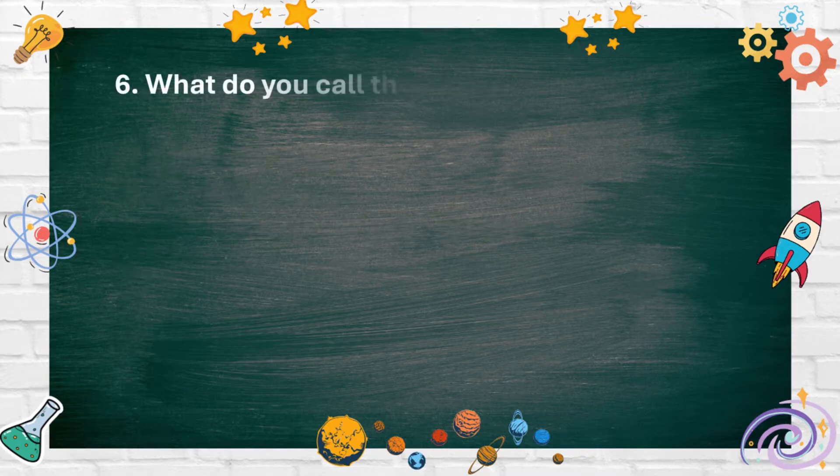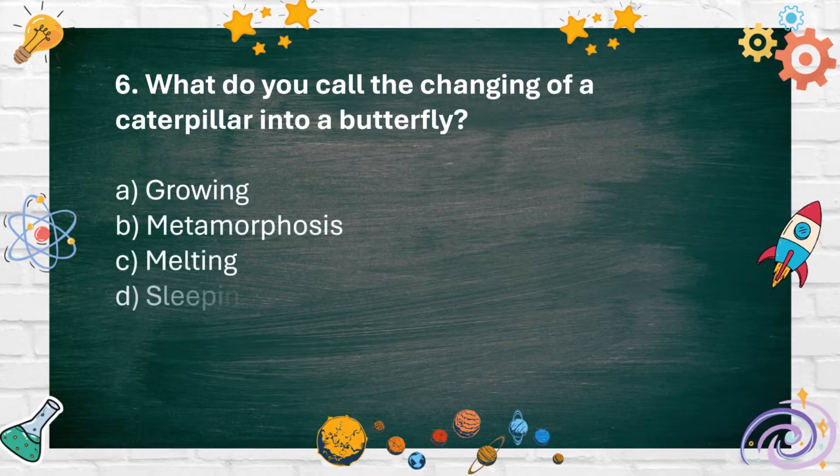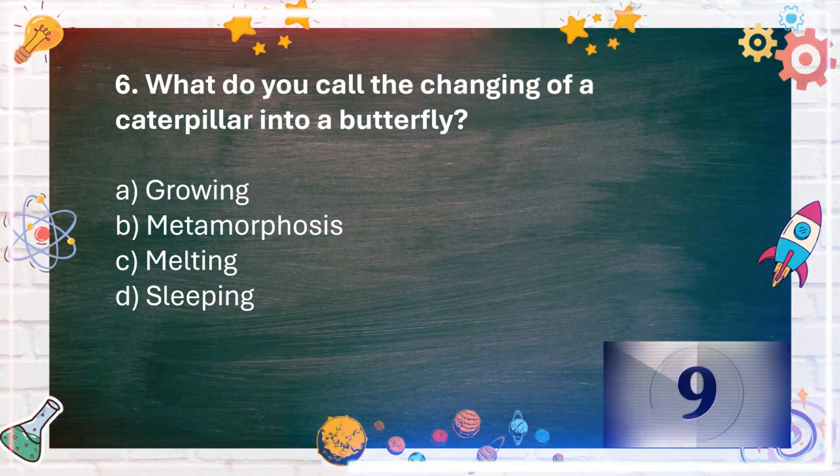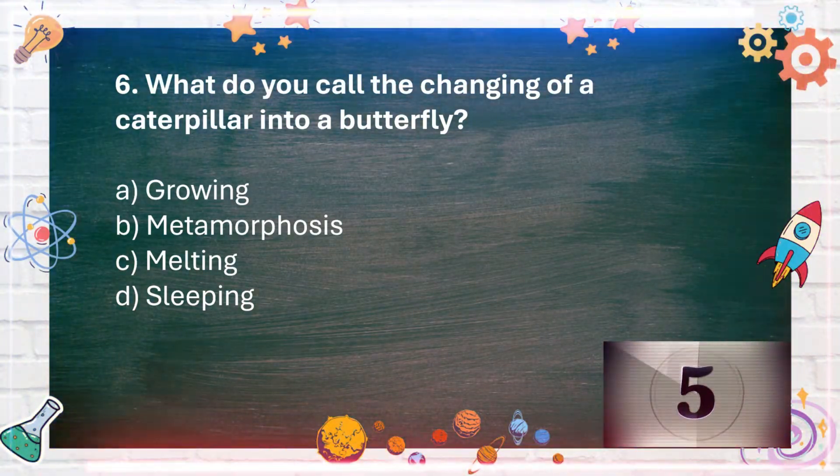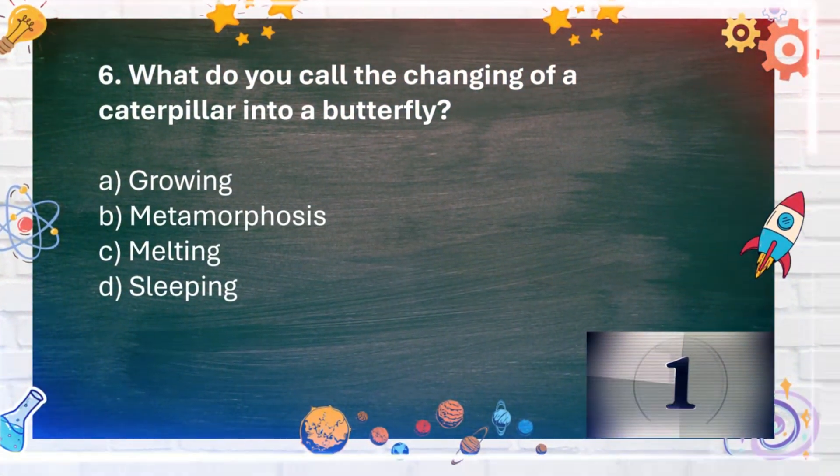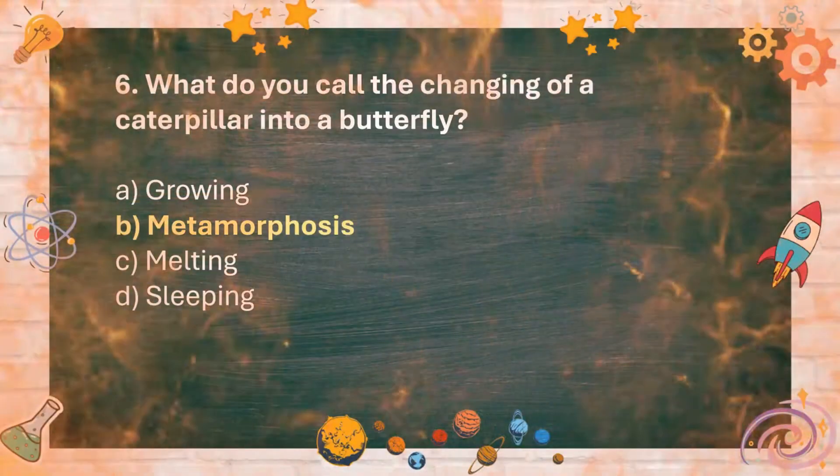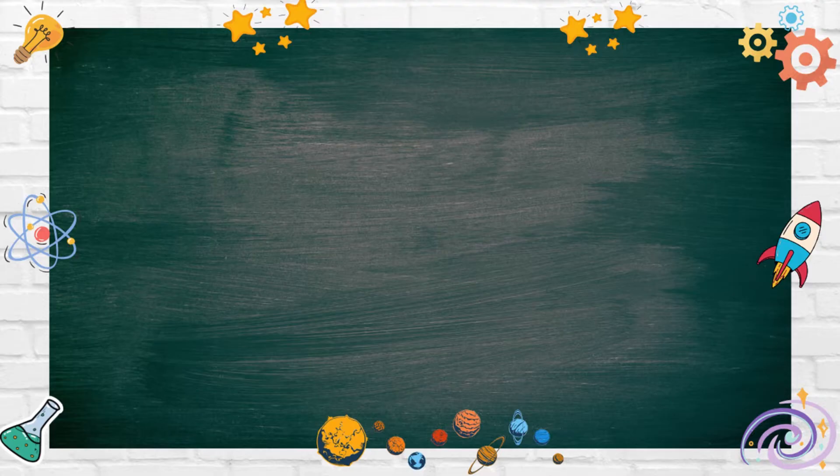Number 6. What do you call the changing of a caterpillar into a butterfly? A. Growing B. Metamorphosis C. Melting D. Sleeping. The answer is B. Metamorphosis.